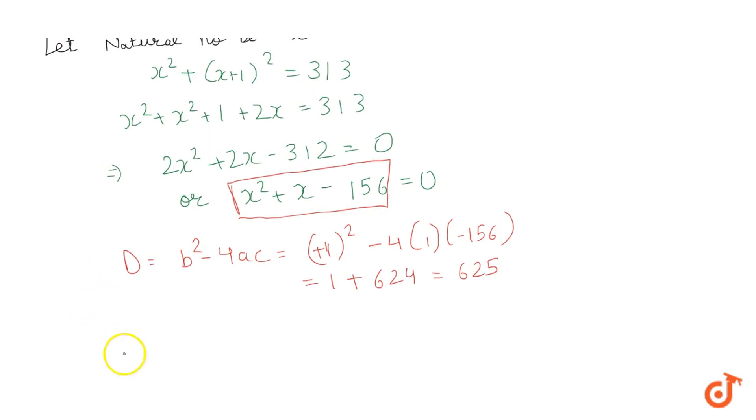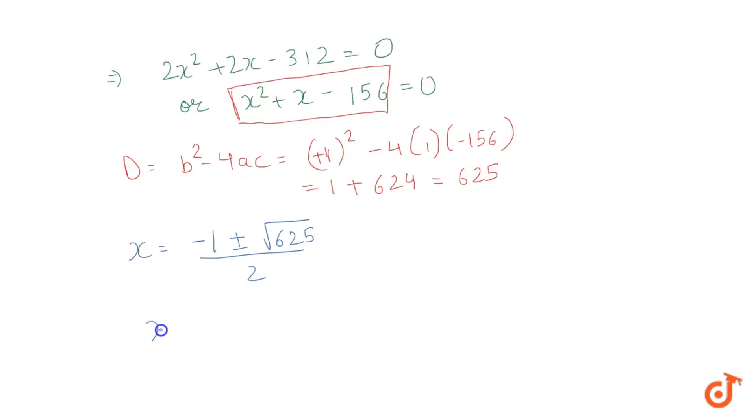turn out to be x = (-b ± √625) / 2. Now this comes out to be x = (-1 ± 25) / 2, which gives me x = (-1 + 25) / 2 or x = (-1 - 25) / 2.